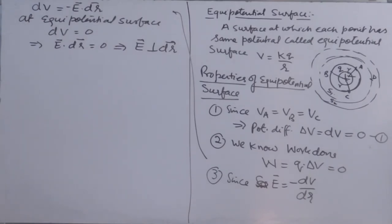I repeat. Electric field is perpendicular to every point lying on equipotential surface. Now, see. This is third.